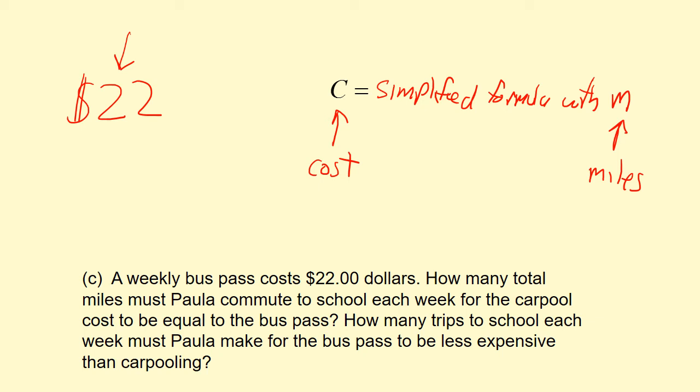Part C asks how many trips to school she must take. A trip to school — remember they told us in part B how far away her school is, and that's a number of miles. So we're looking for how many miles she has to travel for the cost to equal $22. Be careful here: the question is asking not how many miles but how many trips to school. Half a trip would leave you sitting on the side of the road, so it only makes sense to talk about one entire trip. That is the final step — converting miles into trips after plugging $22 into the correct part of your simplified formula.